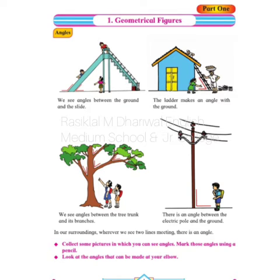So children, in our surroundings, wherever we see two lines meeting, there is an angle. Jaha bhi two lines meet ho rahe hai, mil rahe hai — so there is an angle.